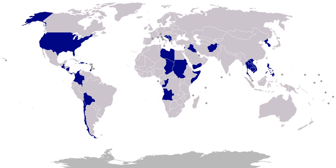1982, Sinai: on March 19, 1982, President Reagan reported the deployment of military personnel and equipment to participate in the Multinational Force and Observers in the Sinai. Participation had been authorized by the Multinational Force and Observers Resolution, Public Law 97-132. 1982, Lebanon, Multinational Force in Lebanon: on August 21, 1982, President Reagan reported the dispatch of 800 Marines to serve in the multinational force to assist in the withdrawal of members of the Palestine Liberation Organization from Beirut. The Marines left September 20, 1982. 1982–1983, Lebanon: on September 29, 1982, President Reagan reported the deployment of 1,200 Marines to serve in a temporary multinational force to facilitate the restoration of Lebanese government sovereignty. On September 29, 1983, Congress passed the Multinational Force in Lebanon Resolution authorizing the continued participation for 18 months.